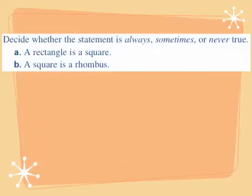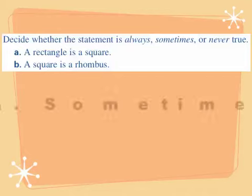This example says: decide whether the statement is always, sometimes, or never true. Part A: a rectangle is a square. To be a rectangle, a shape has to have four right angles. To be a square, a shape has to have four right angles and four congruent sides. So a rectangle is a square is sometimes true, because a rectangle only requires four right angles, while a square requires both four right angles and four congruent sides.